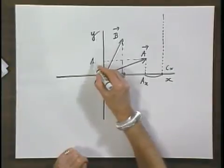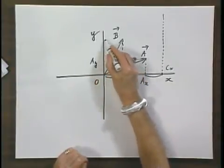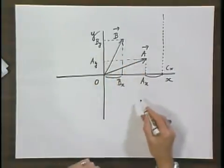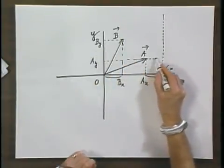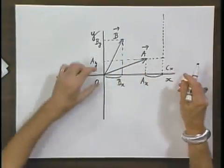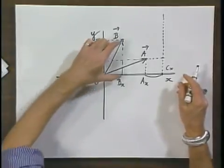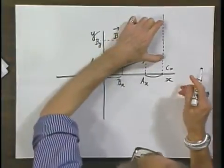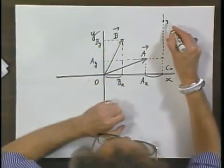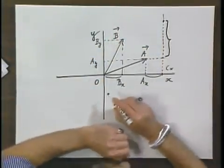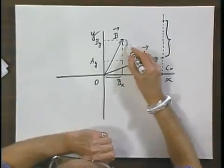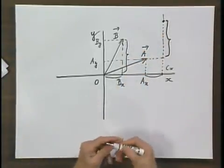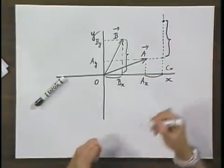This component is A of y, and this component is B of y. Now I know that the y component of C must be A of y plus B of y. So I take this part and put it right on top of here, so that this has the same length as this.